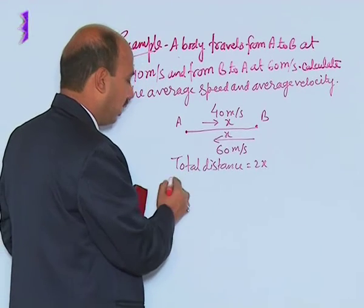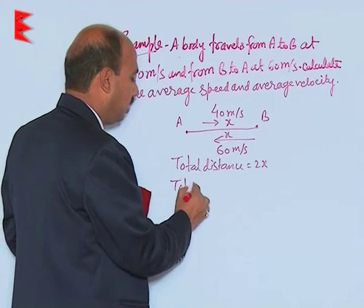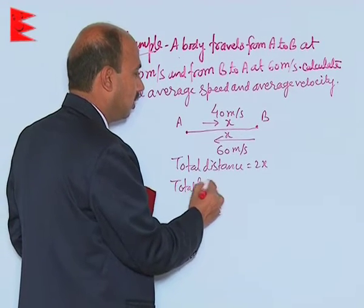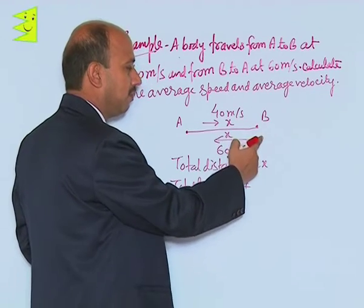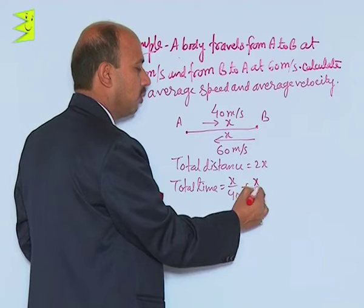Now we can calculate total time. So total time is time going from A to B, that is x upon 40, plus coming back from B to A, that is x upon 60.